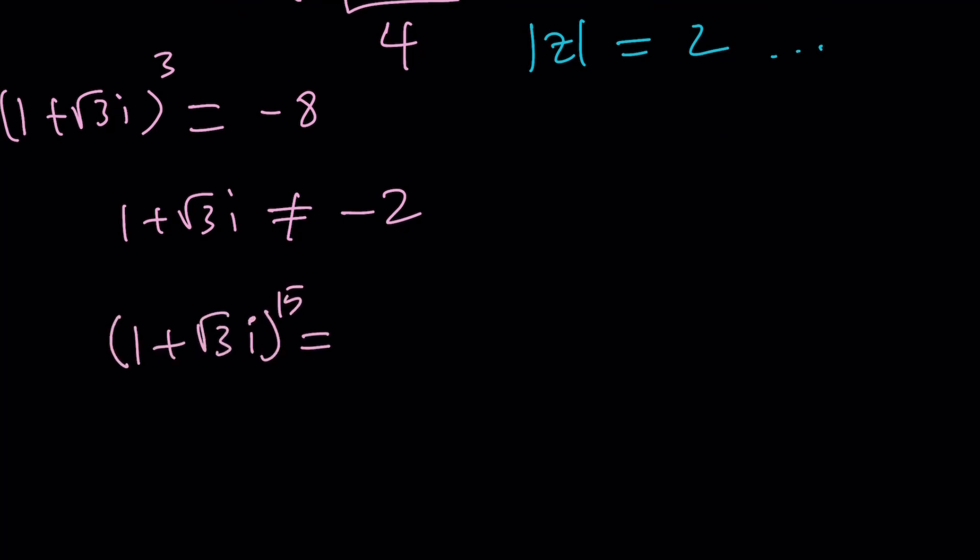So to do the 15th power, I'm going to take this third power, and then raise it to the fifth power, because 3 times 5 is equal to 15. Now this is equal to negative 8. So the answer is going to be negative 8 to the fifth power.